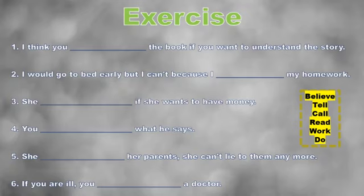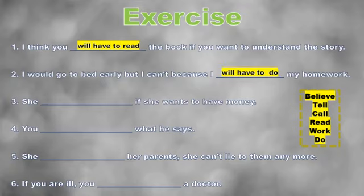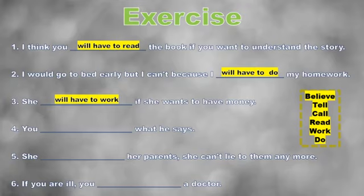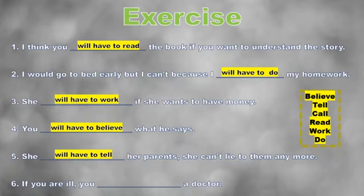Number one: 'I think you will have to read the book if you want to understand the story.' Number two: 'I would go to bed early but I can't because I will have to do my homework.' Number three: 'She will have to work if she wants to have money.' Number four: 'You will have to believe what he says.' Number five: 'She will have to tell her parents because she can't lie to them anymore.' Number six: 'If you are ill or sick, you will have to call a doctor.'